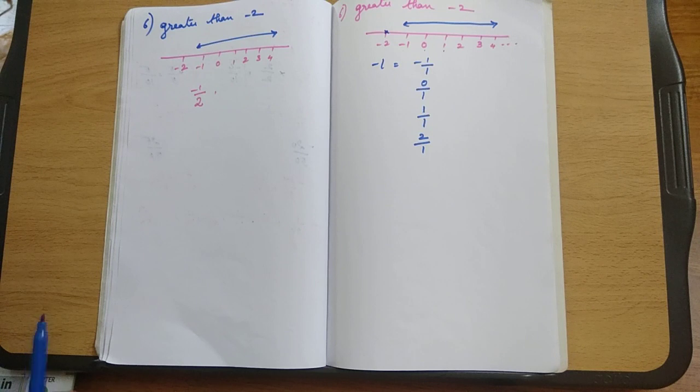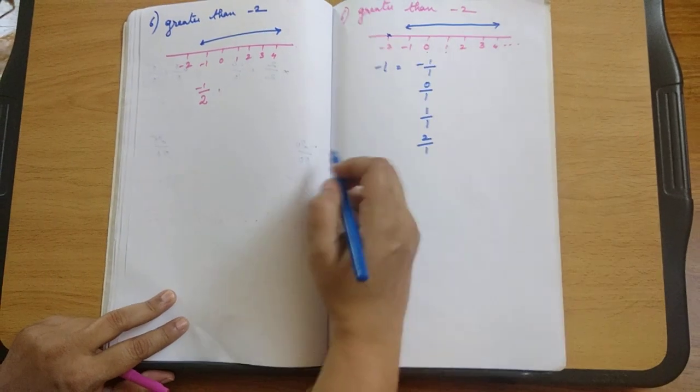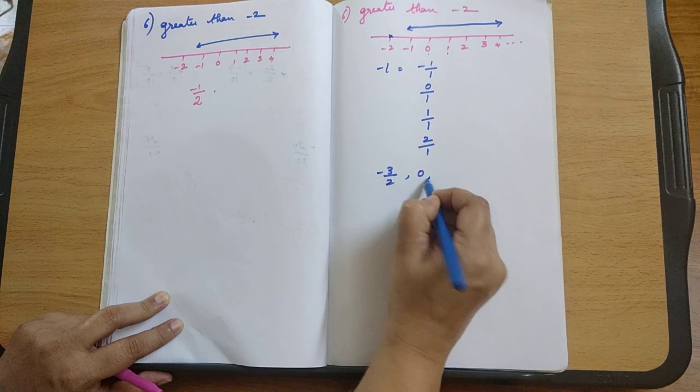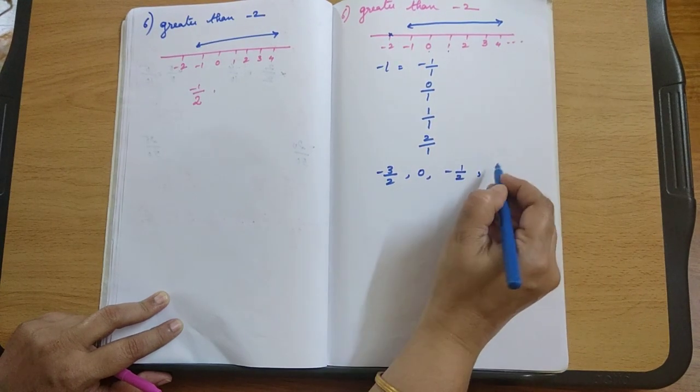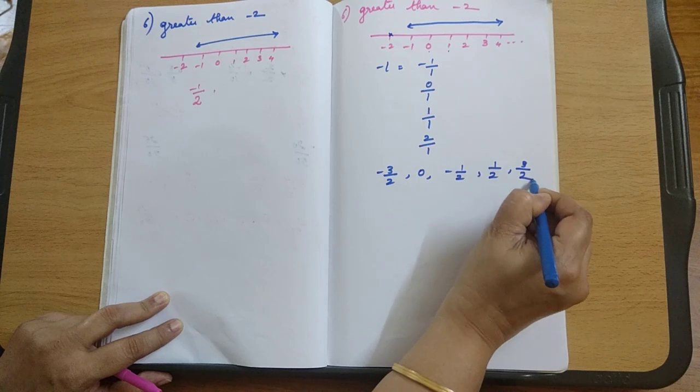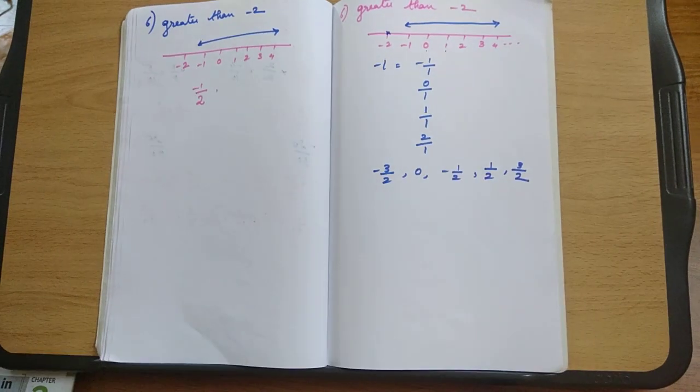If you want to give an example, you can write the numbers which are greater than minus 2 are minus 3 by 2, 0, minus half or plus half, or 3 by 2. All of them are greater than minus 2.